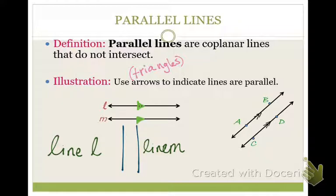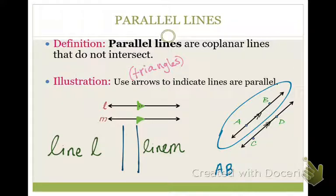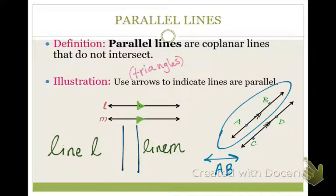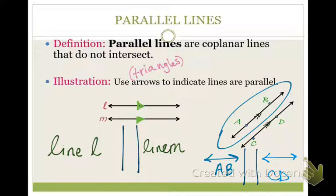Now let's name the second pair. These lines are named differently because they have points. We name a line with two points — like line AB — and since it has arrows at both ends, it's a line, not a segment or a ray. Segments have a start and an end; rays have a starting point and go infinitely in one direction; lines have arrows at both ends. So we write line AB, the parallel symbol, then line CD with arrows above each.